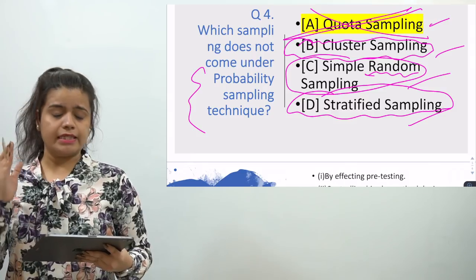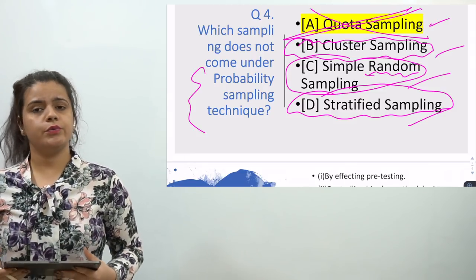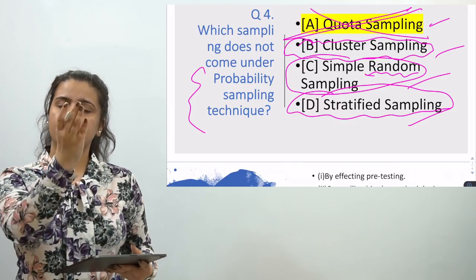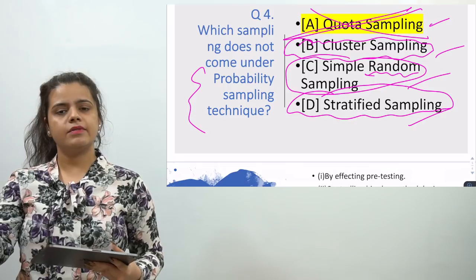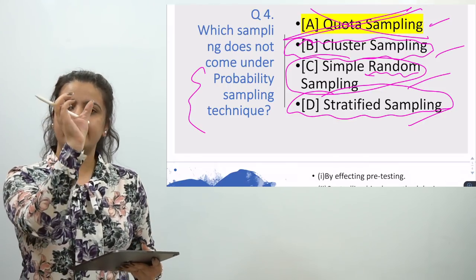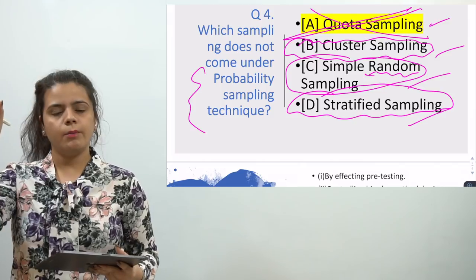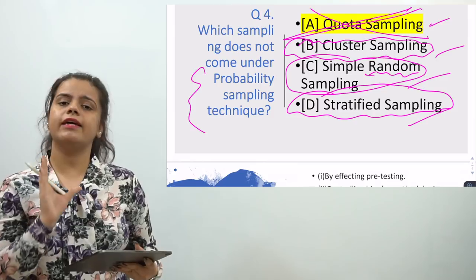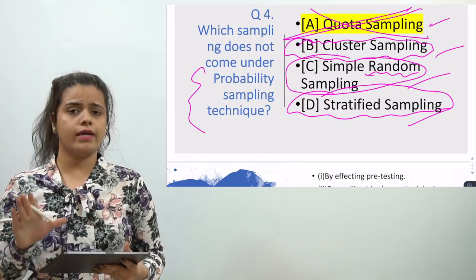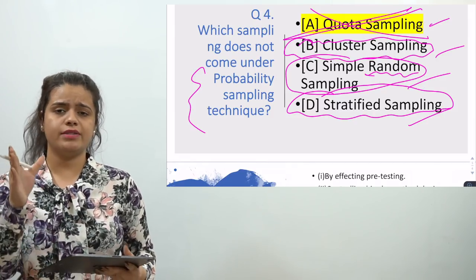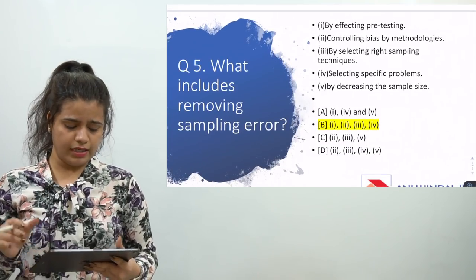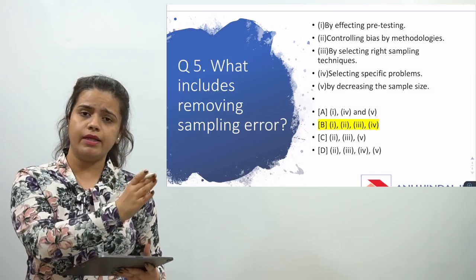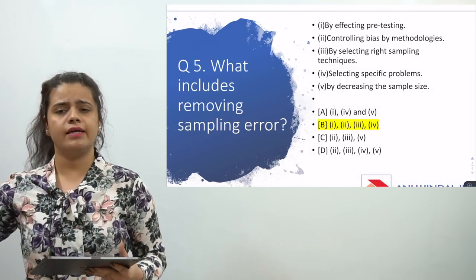Sampling is another very important topic for your UGC NET exam. You need to know what probability sampling is, what non-probability sampling is, what the different sampling methods are, and what the features of those sampling methods are. This is also a very important topic for your UGC NET exam.